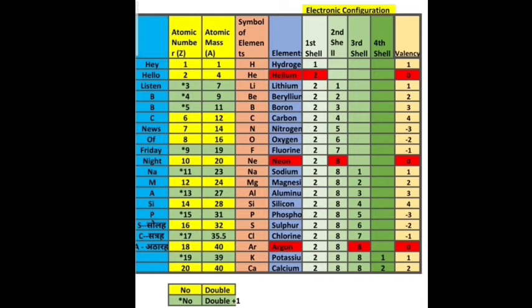Continuing similarly: 2,8,2 — 2,8,3 — and so on. At argon, atomic number 18, the configuration is 2,8,8 — this shell is completely filled. For potassium, atomic number 19, the configuration is 2,8,8,1. For calcium, atomic number 20, the configuration is 2,8,8,2.